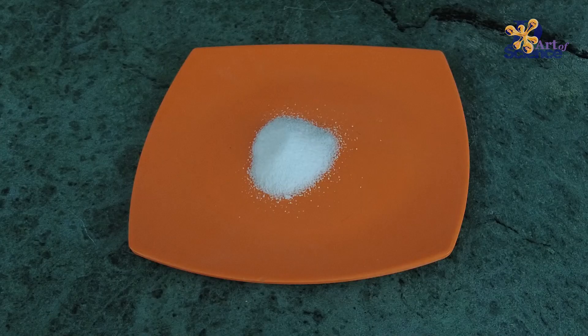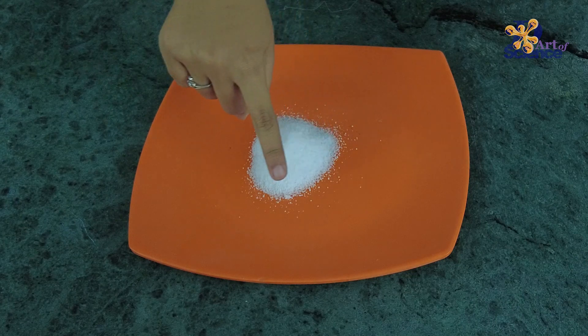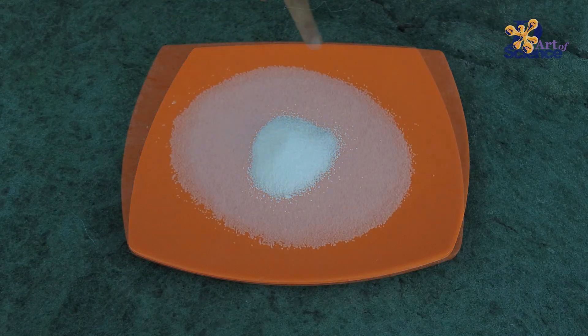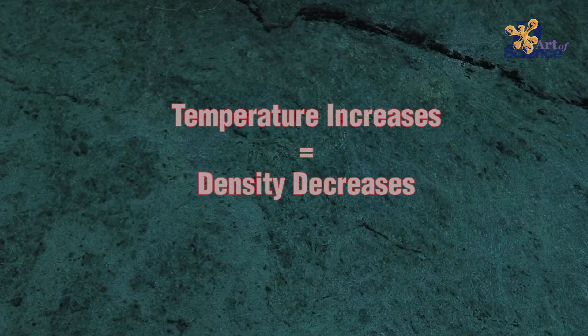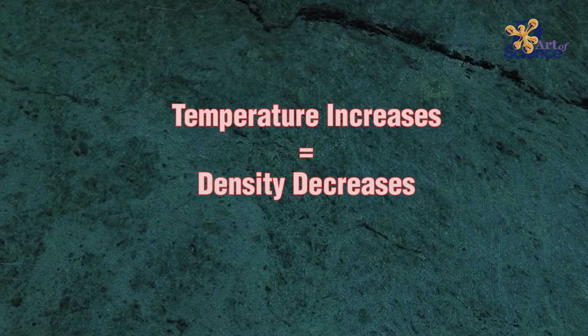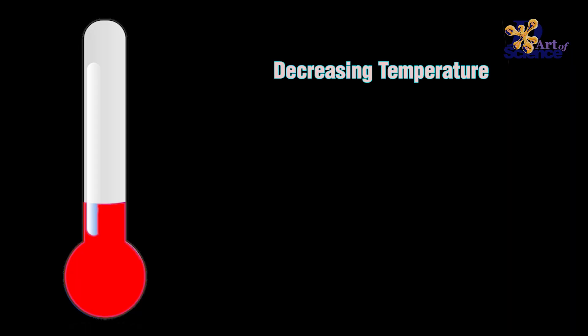Earlier, the same amount of volume had a higher concentration of salt, but now it has a lower concentration. The mass in the same volume decreases, and therefore density decreases with an increase in temperature.